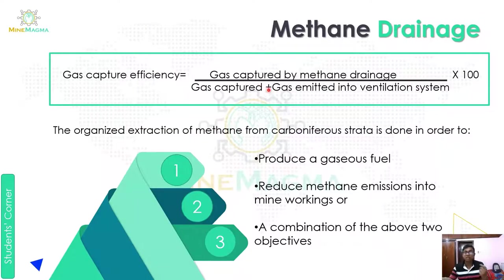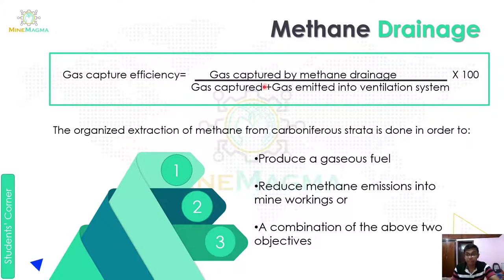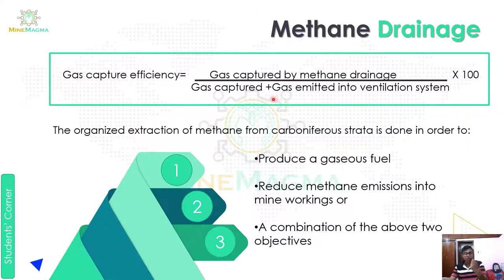Next is methane drainage. What is the formula for methane drainage? The key metric is gas capture efficiency. Gas capture efficiency equals gas captured by methane drainage, divided by the sum of gas captured plus gas emitted into the ventilation system, multiplied by 100. This formula tells us the capture efficiency during methane drainage operations.